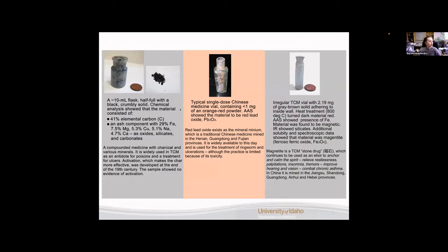Our first one here on the far left was about a 10 milliliter flask and it was full of this black crumbly material. Chemical analysis of this black crumbly stuff showed that the material was primarily carbon but it also had an ash component made up of iron, magnesium, copper, sodium, and calcium and those components existed as oxides, silicates, and carbonates within the material. So what this chemical analysis leads us to believe about this sample was that this right here is a compounded medicine with charcoal composed with various other minerals. It is widely used in TCM or traditional Chinese medicine as an antidote for poisons and a treatment for ulcers. Activation makes charcoal much more effective but this strategy wasn't really developed until the end of the 19th century and this sample showed no evidence of activation meaning it was prior to the end of the 19th century.